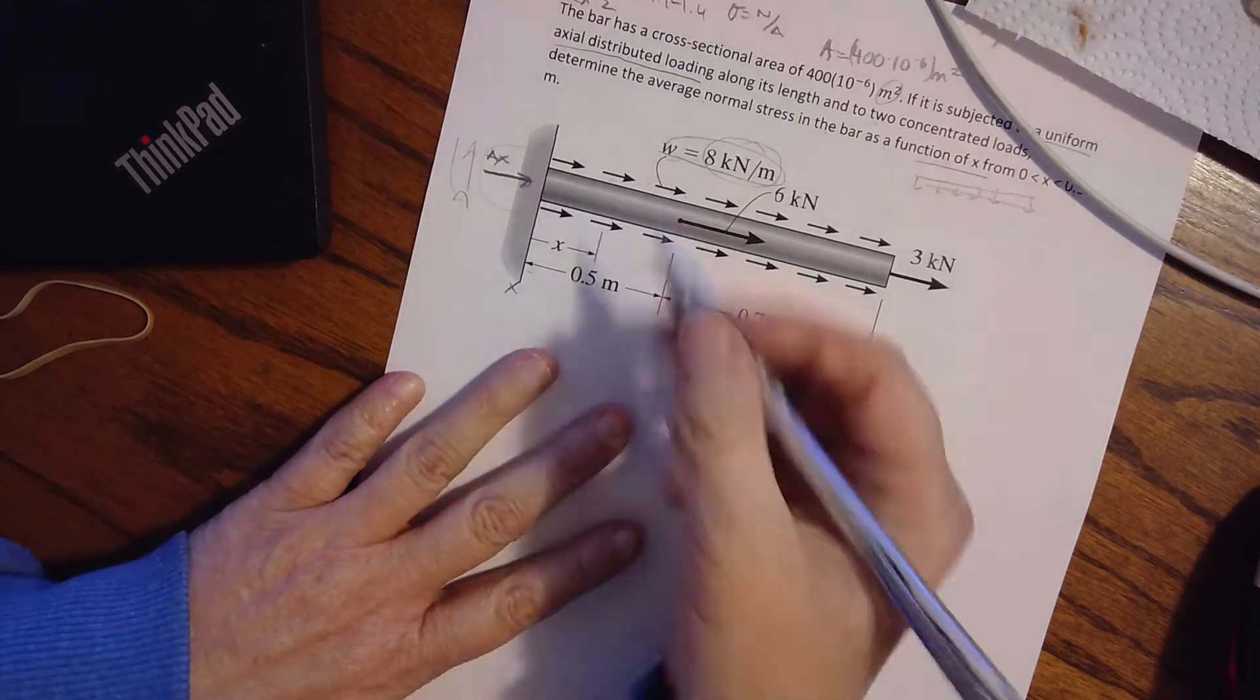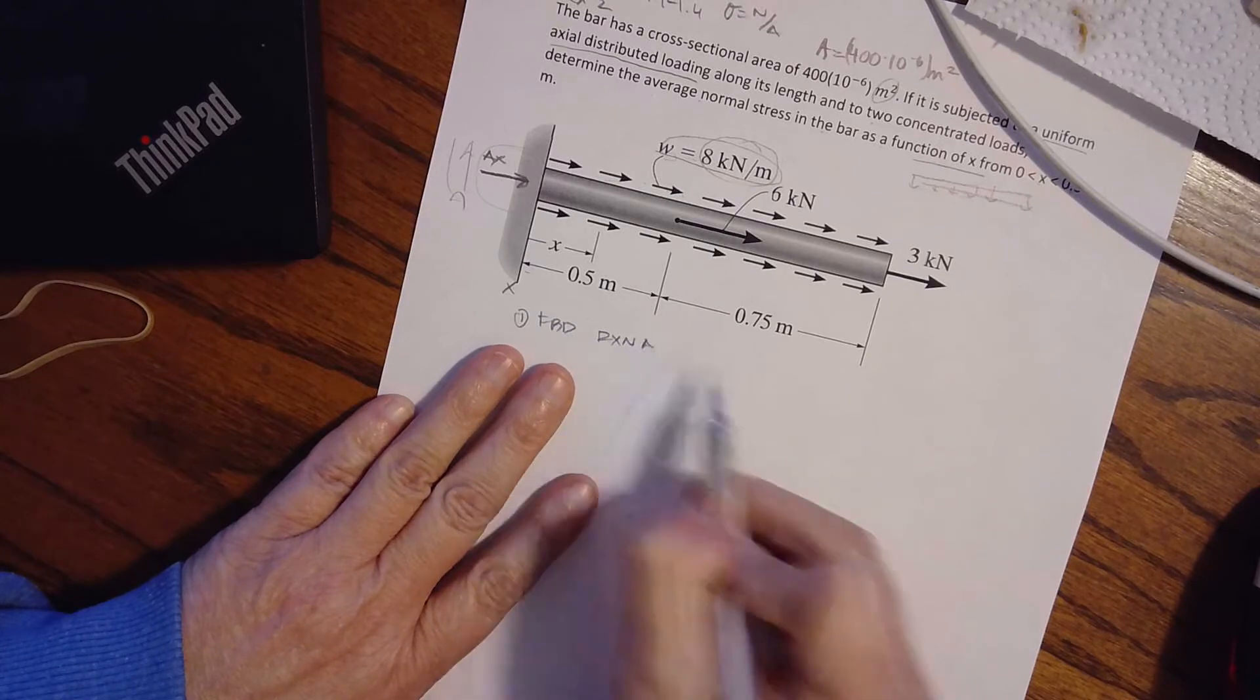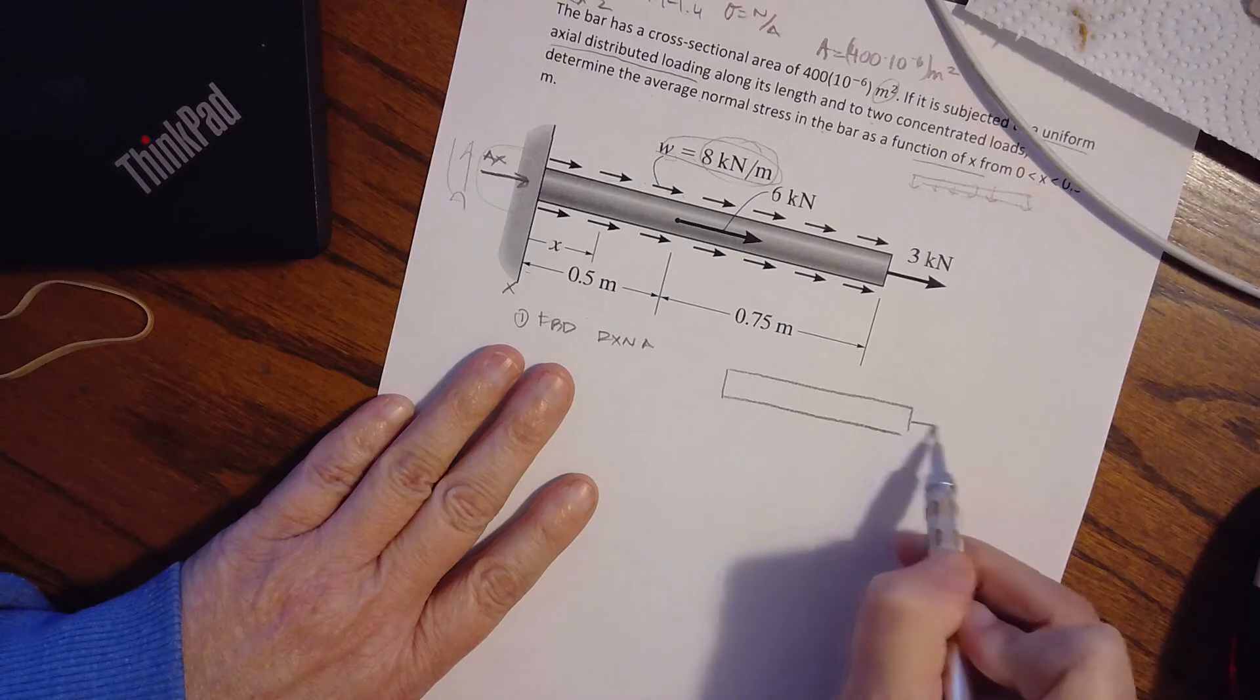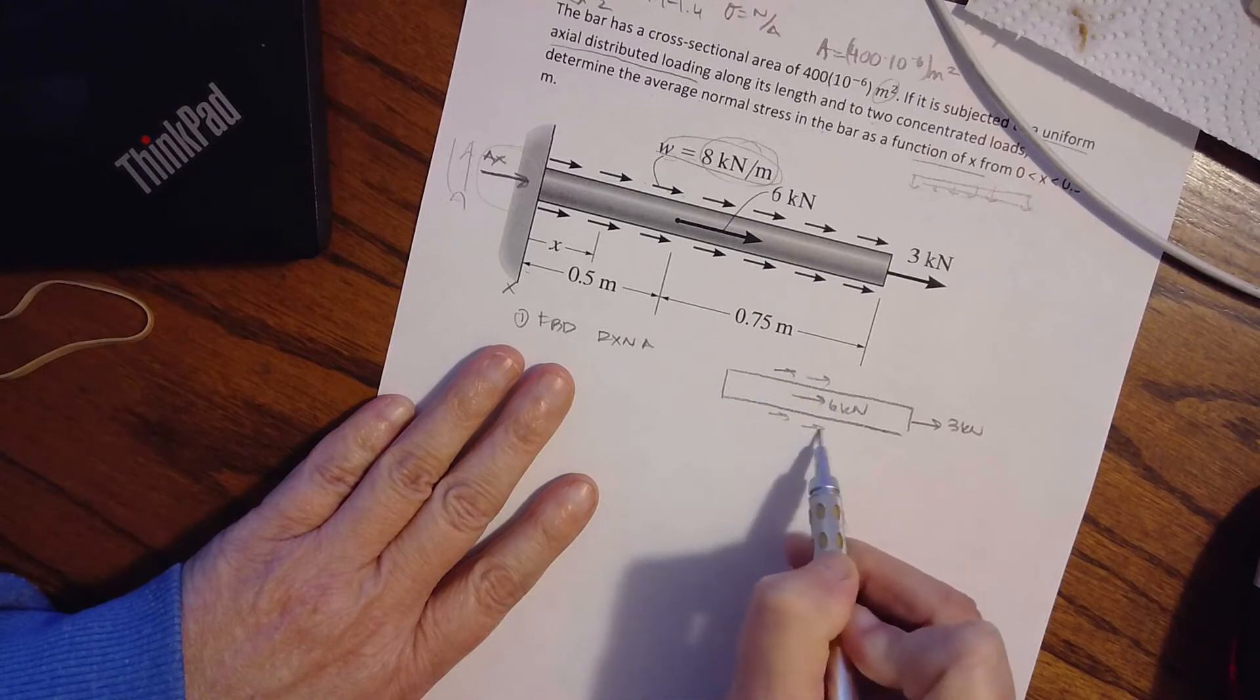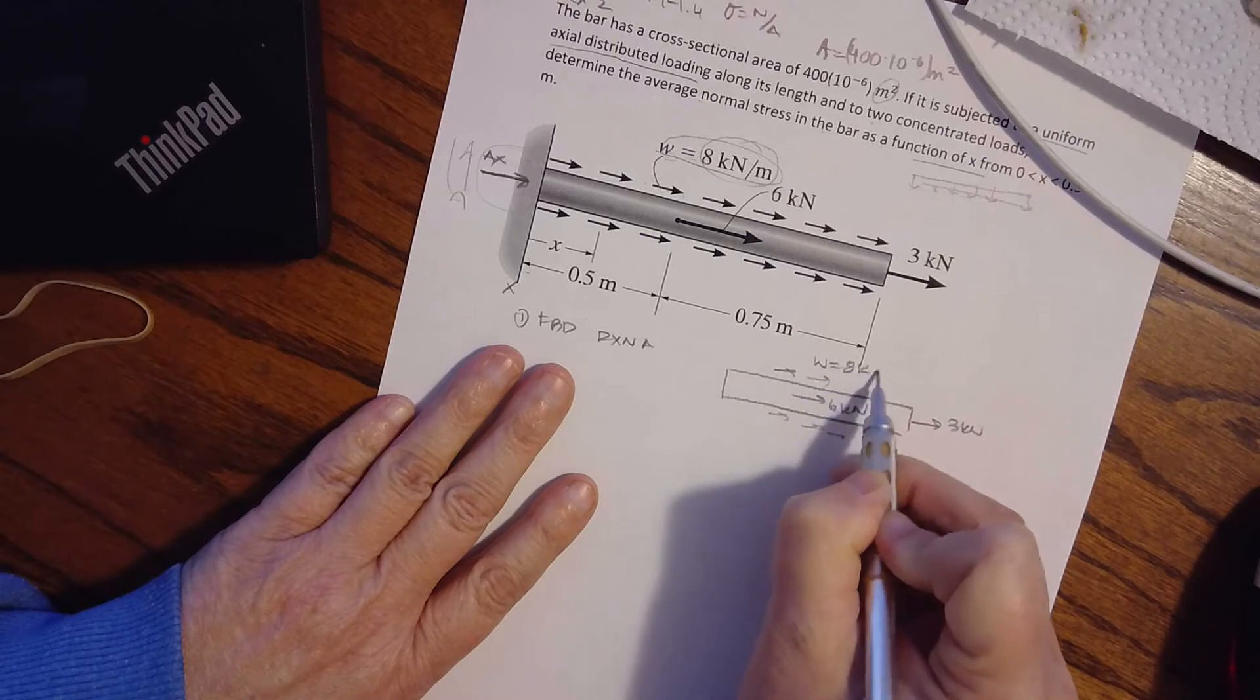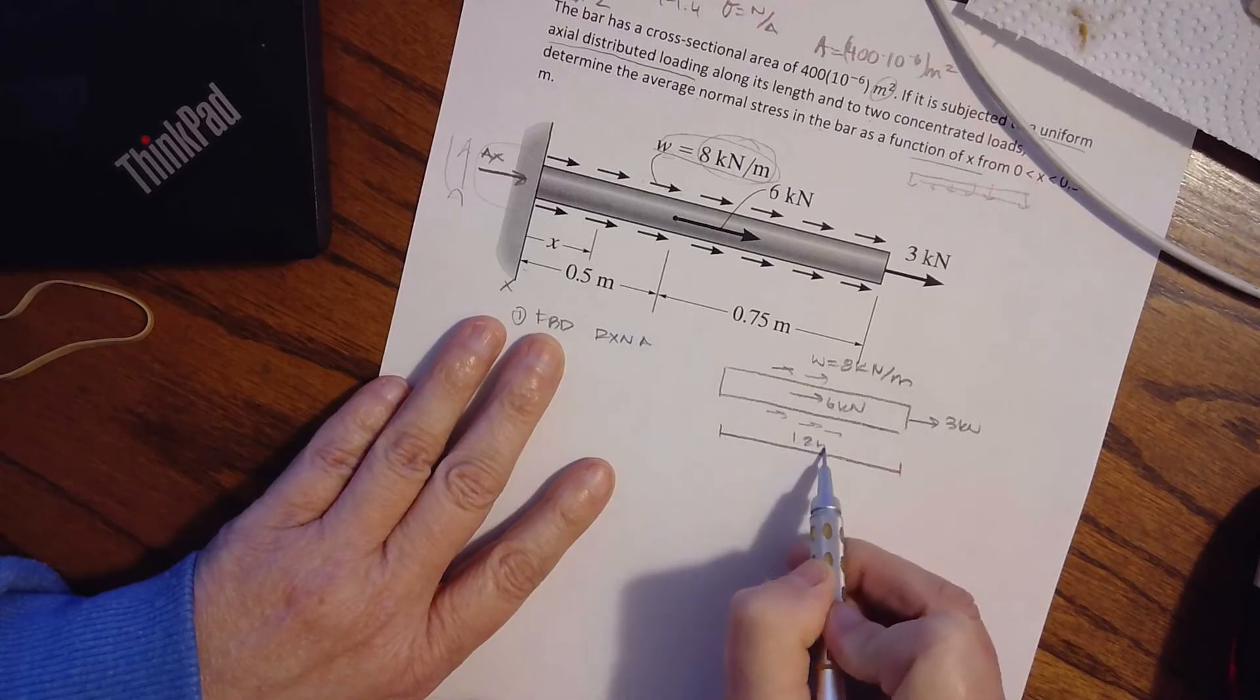So the first thing I have to do is, number one, I have to draw a free body diagram, and I have to find that reaction at A. Okay, so here's my beam, and I have three kilonewtons. I have six kilonewtons, and I have this uniformly distributed W equals eight kilonewtons per meter. And the whole thing here is 1.25 meters.